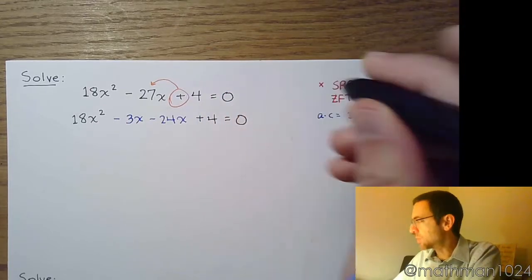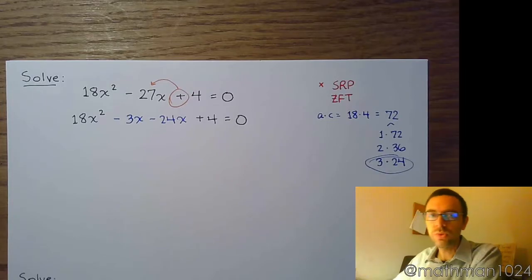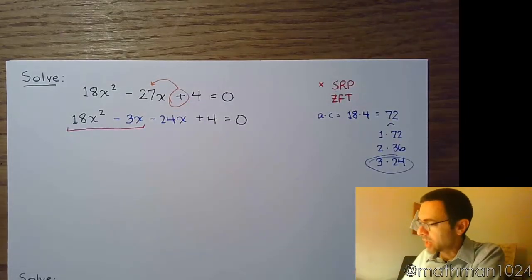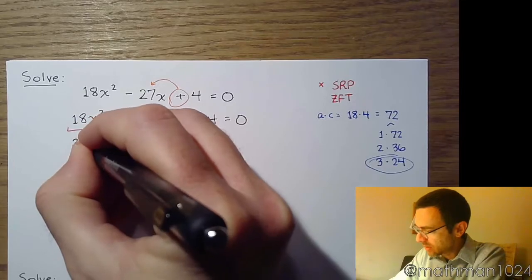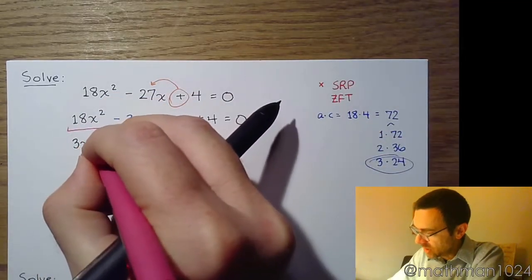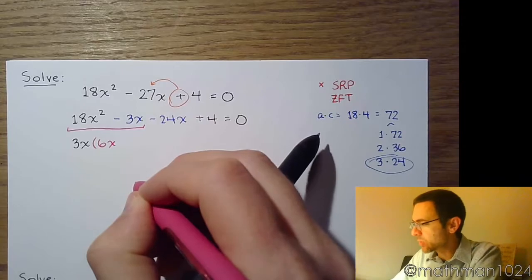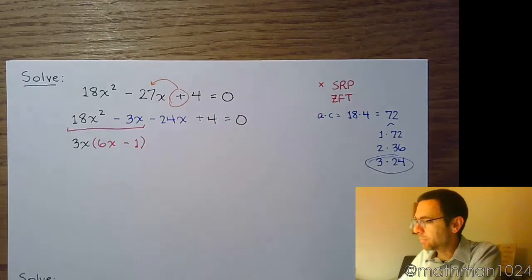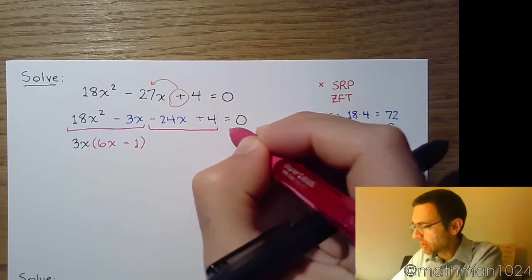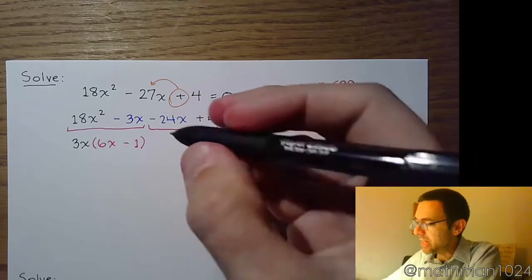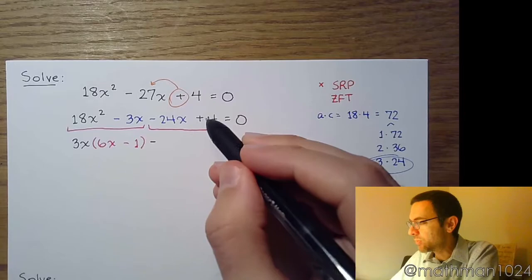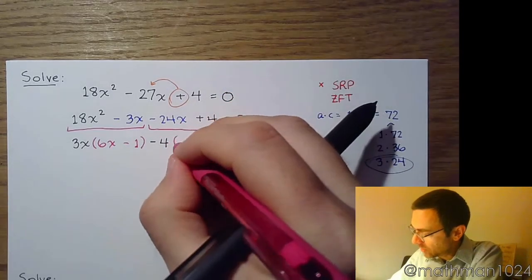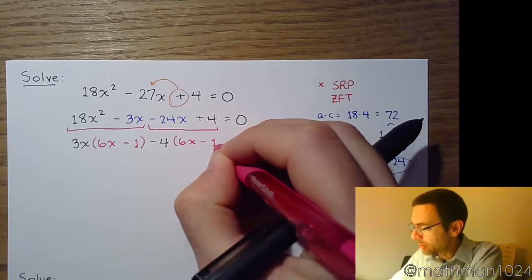Now that we have four terms, we're going to use factoring by grouping to finish this. In the first group, the common factor is 3x. Factor that out, that gives me 6x minus 1. In this next group, I start off with a negative, and the common factor for 24 and 4 is 4. I'm left with 6x minus 1. That's the way factoring by grouping is supposed to work.